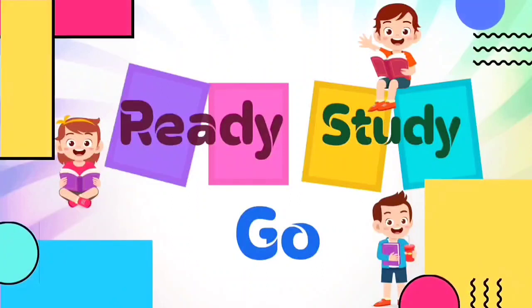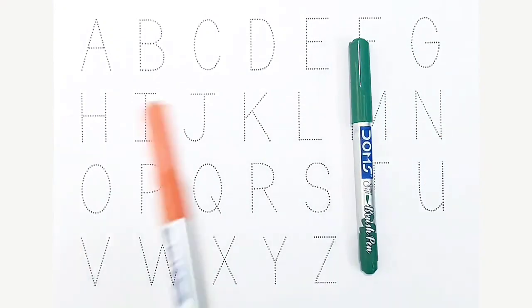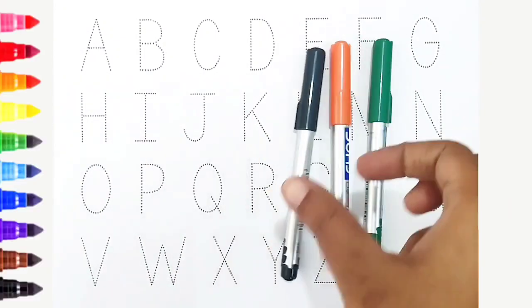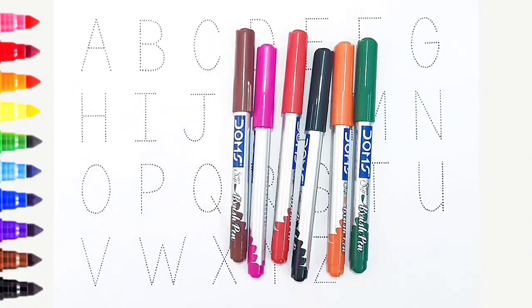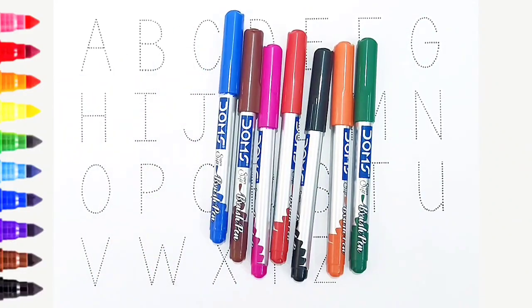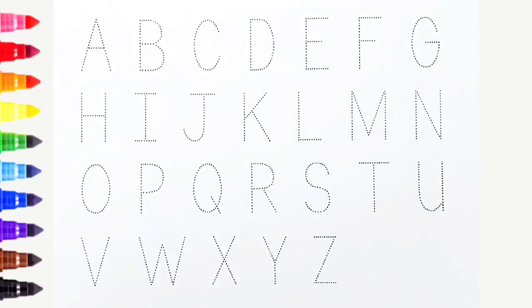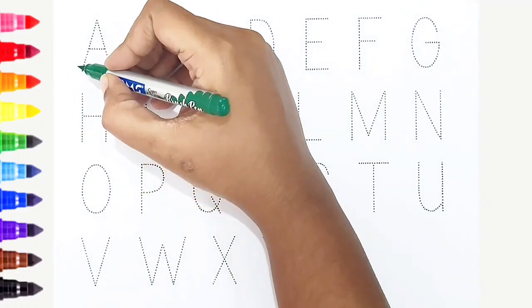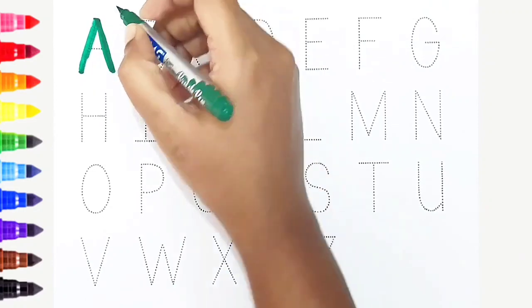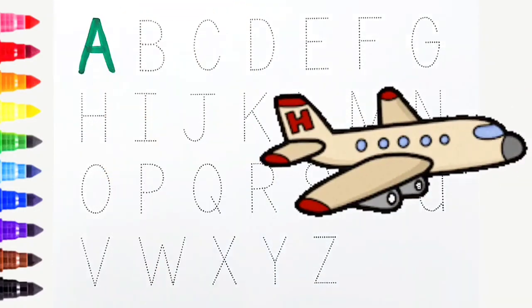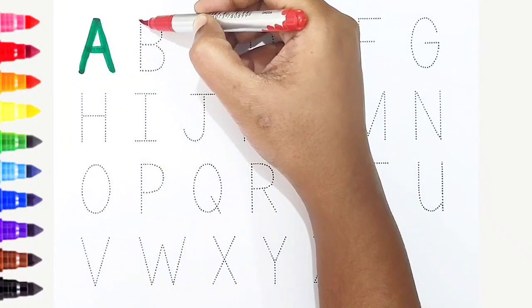Ready, study, go! Green color, orange color, black color, red color, pink color, brown color, blue color. Hi kids, today we can learn the alphabets from A to Z. A, dark green color, A is for aeroplane. B, red color, B is for buffalo.